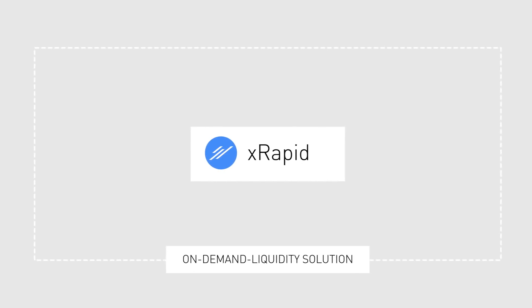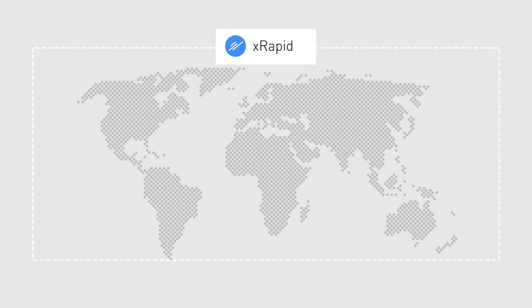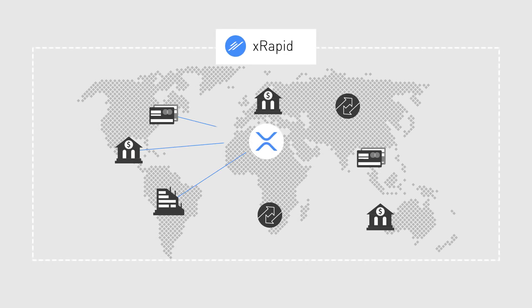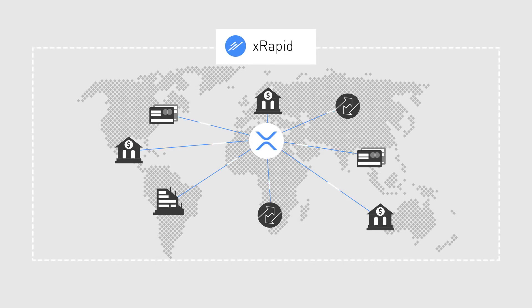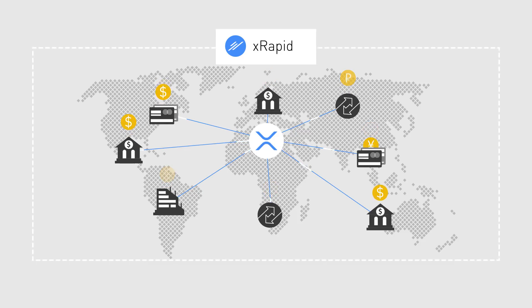XRapid is an on-demand liquidity solution provided by Ripple Labs. It is designed for financial institutes to use Ripple's XRP asset as a bridge currency between fiat currencies when making cross-border payments.